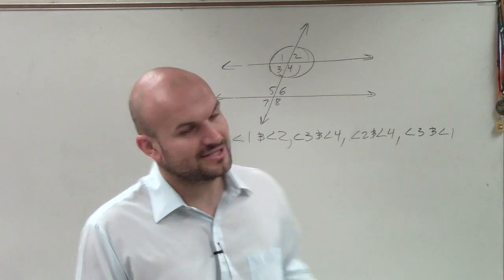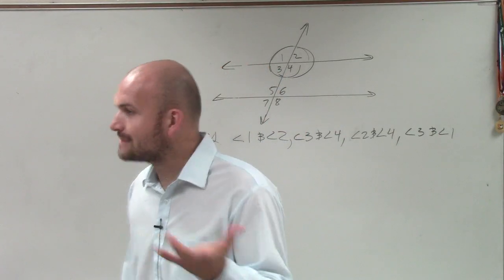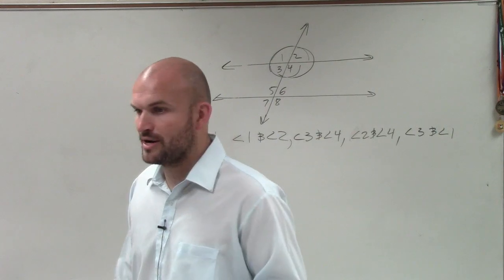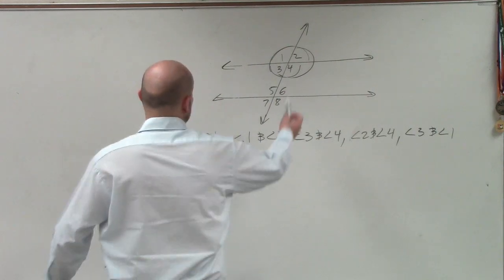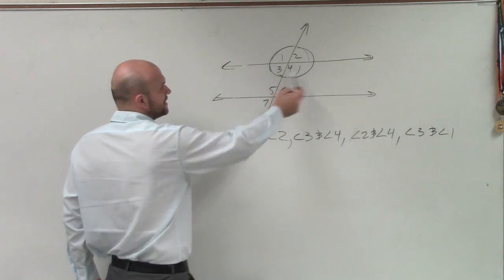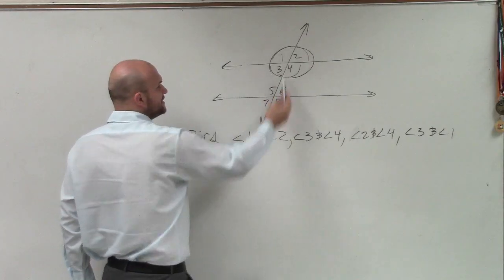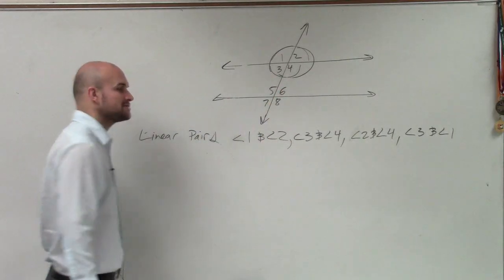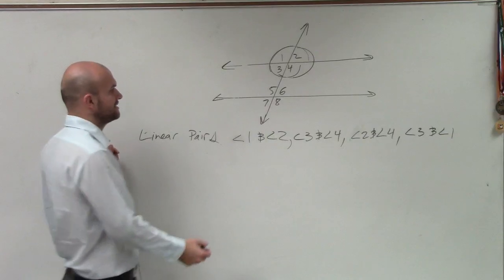The most important thing I want you guys to understand is linear pairs, they add up to 180, but they do not prove lines are parallel. Notice how these two lines, notice how these linear pairs, they only deal with these two lines. They have nothing to do with determining if these two angles are parallel or not. And a lot of students forget that and get that confused.